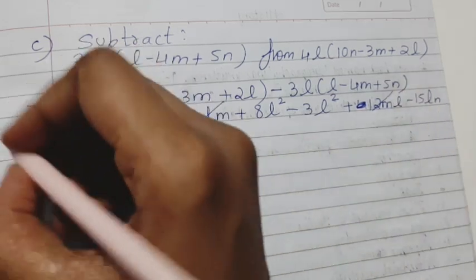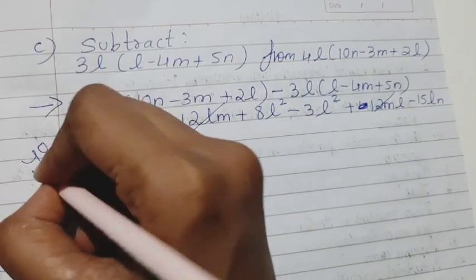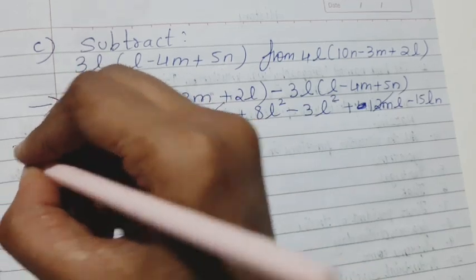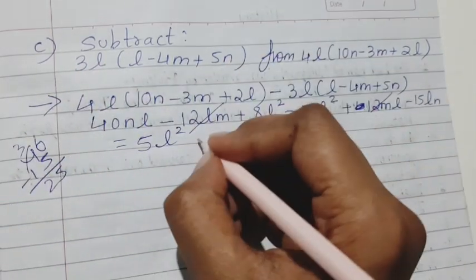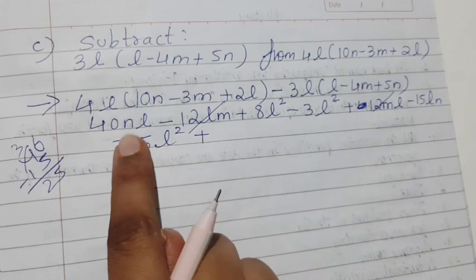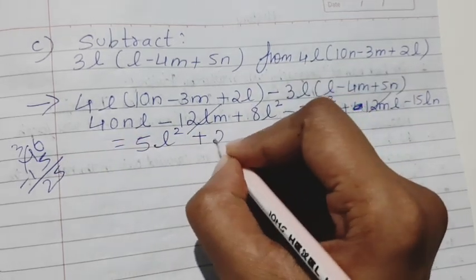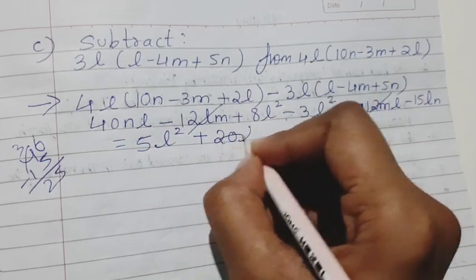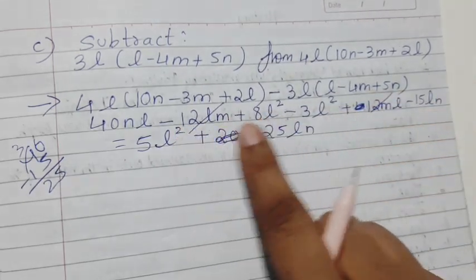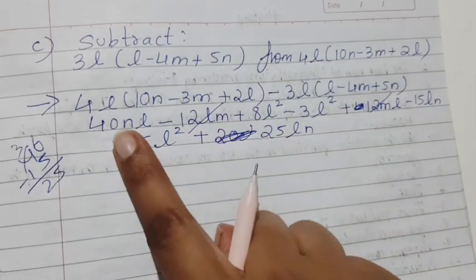So you will get 5 here. 3 minus 1 is 2, 25. So write down plus positive, this is the sign of the greater, so this one is greater. 25ln. It is 25ln you will get if you subtract this with this.